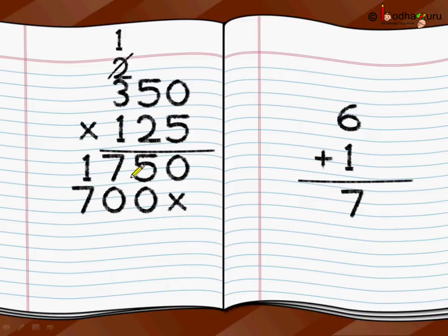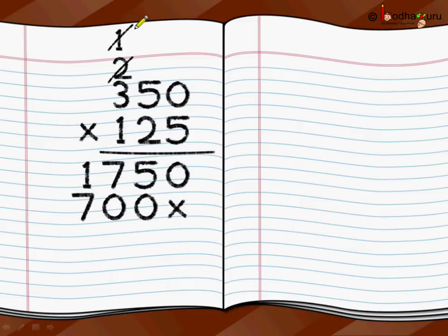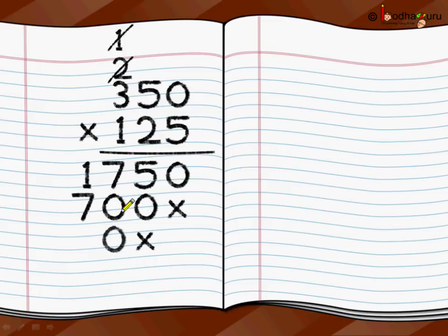Now we move to the next position of the multiplier, which is 1. We cut this carry over so that we are not confused, then we write x here. Now we start: 350 multiplied by 1, which is simple — anything multiplied by 1 is the same number. So 1 multiplied by 0 is 0, 1 multiplied by 5 is 5, 1 multiplied by 3 is 3. So we have done three single-digit multiplications: 350 multiplied by 5, 350 multiplied by 2, and 350 multiplied by 1.